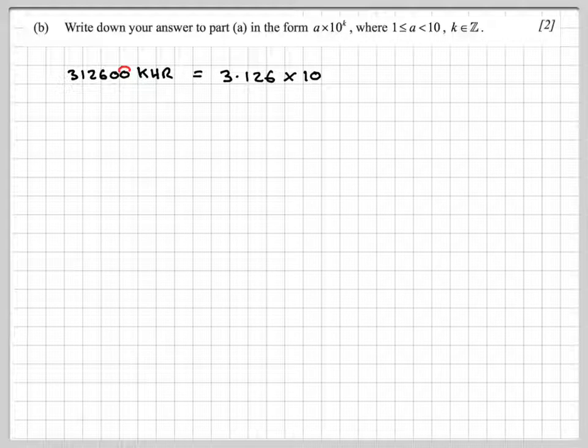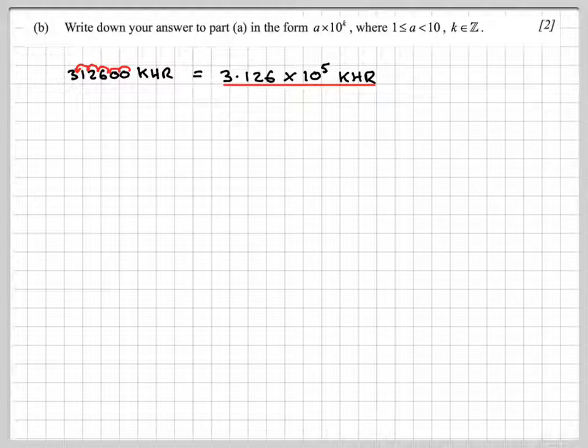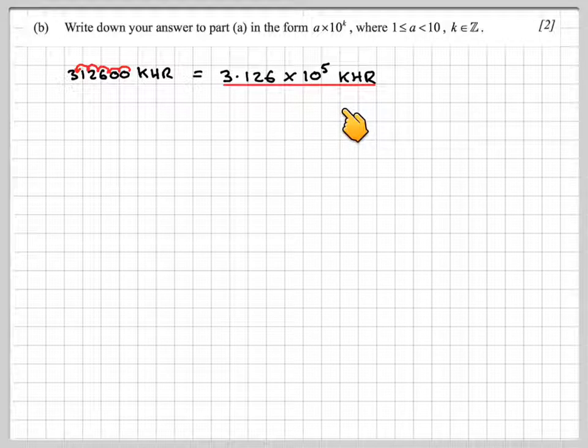How many times do we move the decimal place? 1, 2, 3, 4, 5. So the exponent is 5. The final answer is 3.126 × 10^5 KHR.